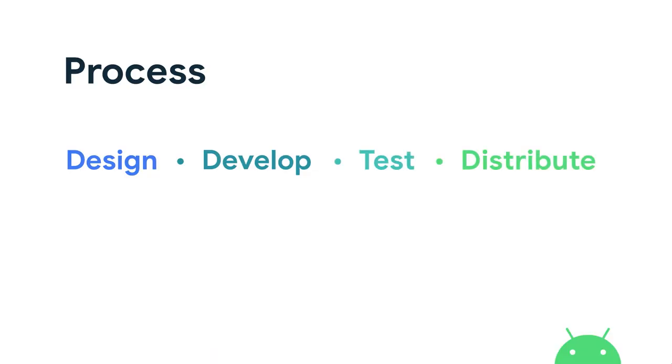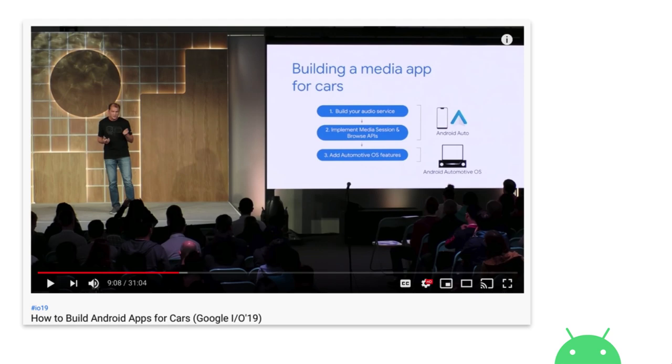In order to get your app ready for Automotive OS, there are four key steps: design, develop, test, and distribute. I'll go through each one in some level of detail. Back in May, we presented a much more detailed design and technical talk on how to build Android apps for cars. If you haven't already looked into it, I highly recommend it as a good starting point.